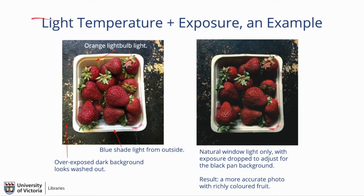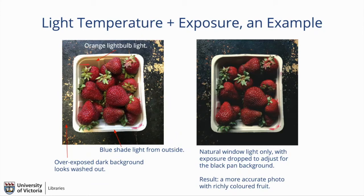In this example, there is a large black cookie sheet — the sensor sees all the darkness and thinks it's in a dark space, so it brings up the exposure. The container that the strawberries are in becomes overexposed, giving you what's called blown out highlights — a loss of detail you can't fix later, so there are no pixels in the edge of the container. Also, the kitchen light is on, giving orange light from the bulb, while a window is open bringing in blue shade light, resulting in two contrasting color temperatures and mixed light that is unappealing.